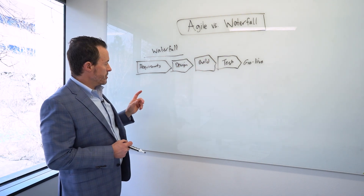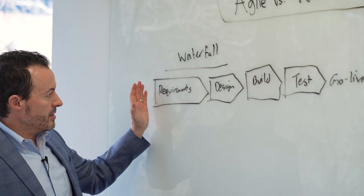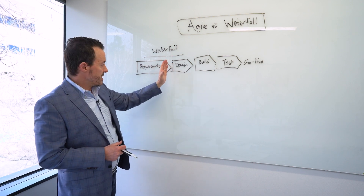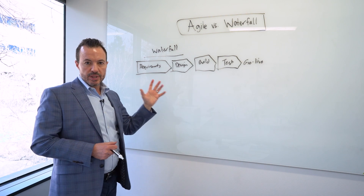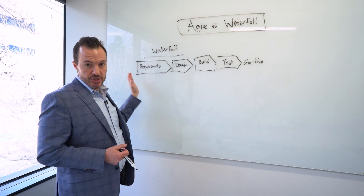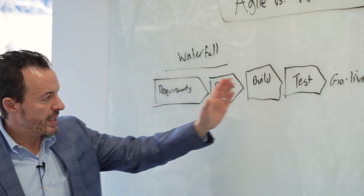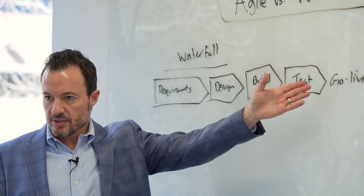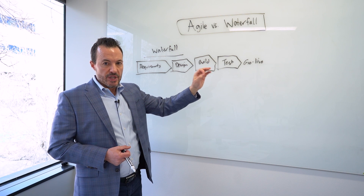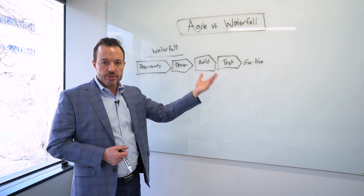This has been one of the problems with waterfall and why it has such a bad reputation today. Organizations oftentimes got stuck in one or more of these phases. For example, requirements gathering for a large, complex organization could sometimes take several months or over a year just to define requirements — spending a lot of time and money before ever getting any value out of the technology investment. What agile does is try to attack that vulnerability and give us an alternative to that problem.